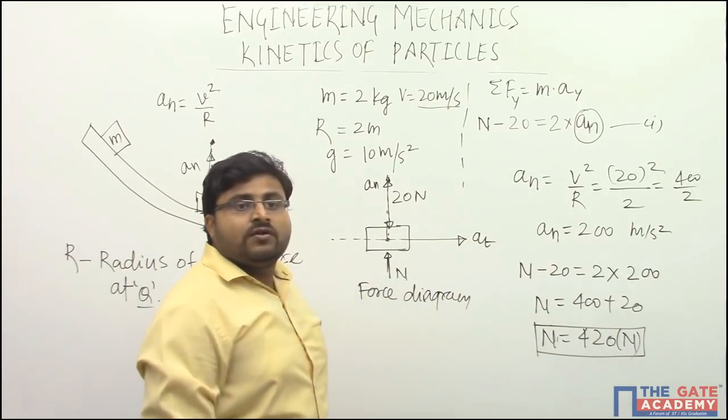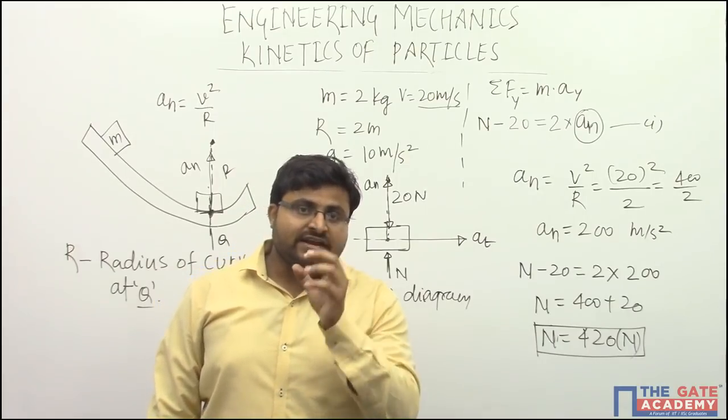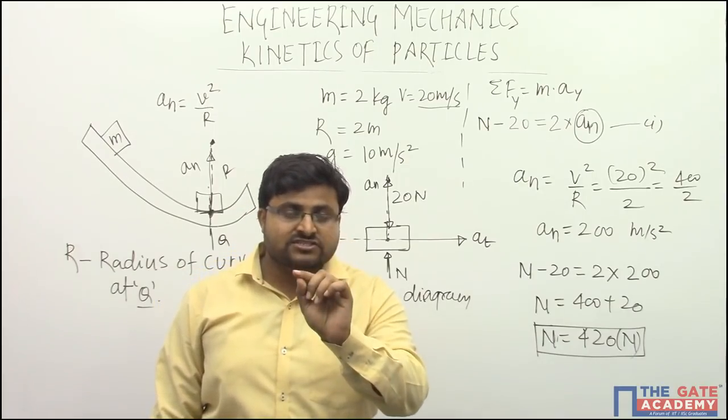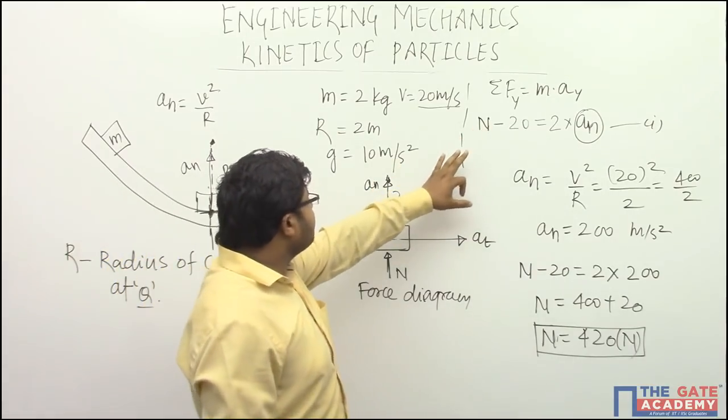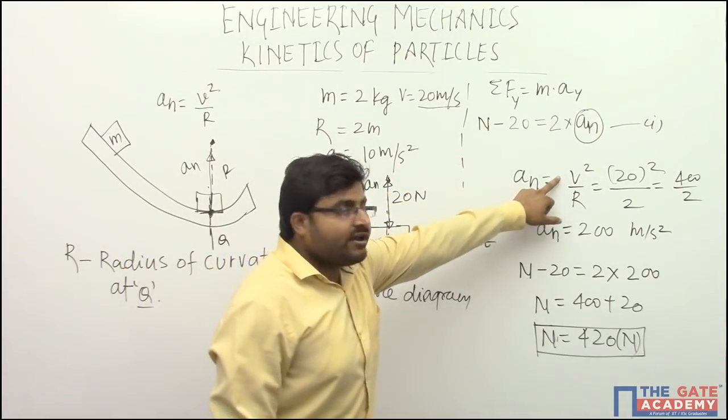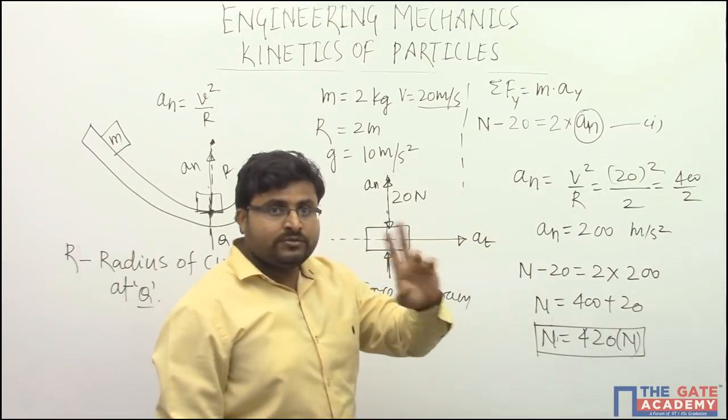Now looking at this, two things we should keep in mind. What we have done? We have found the component of acceleration along normal direction. What is that component of acceleration? That is v square by r. This you should keep in mind. Radius of curvature is given here as 2 meter.